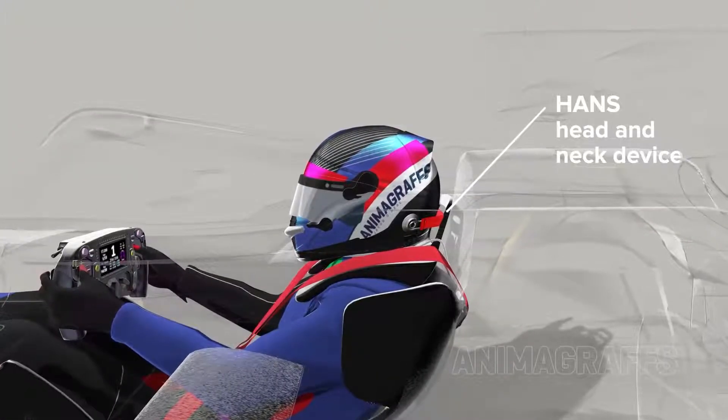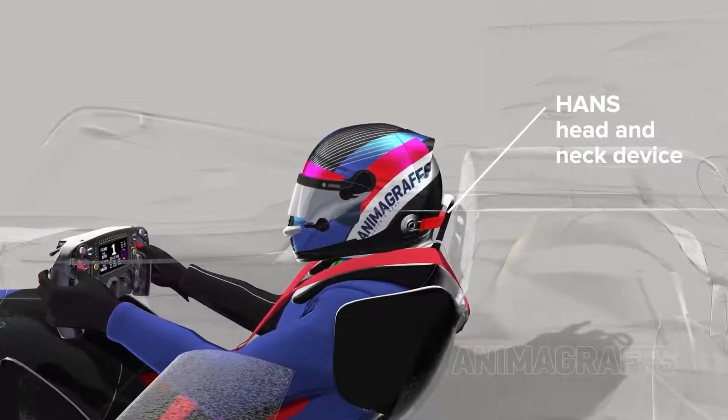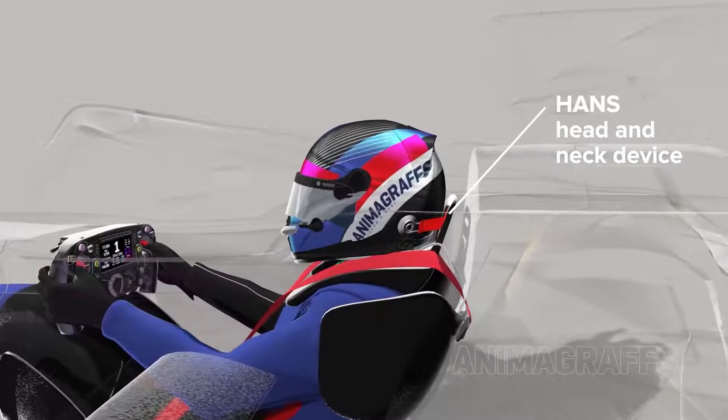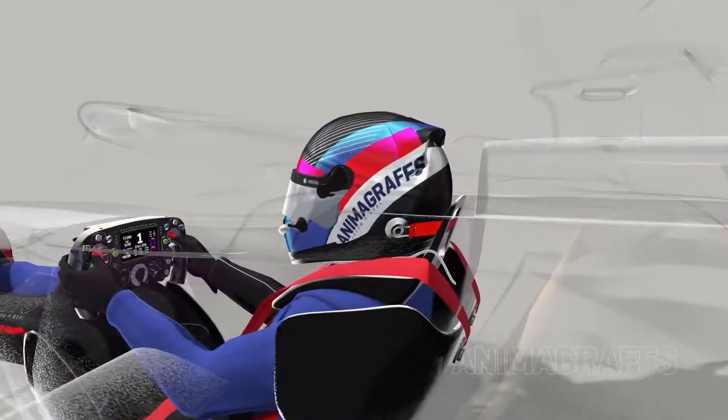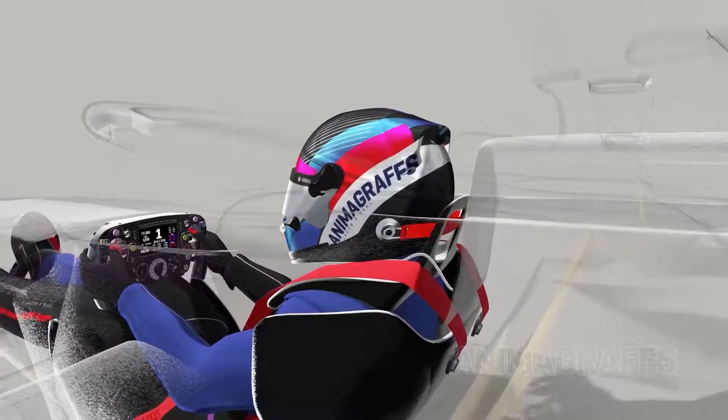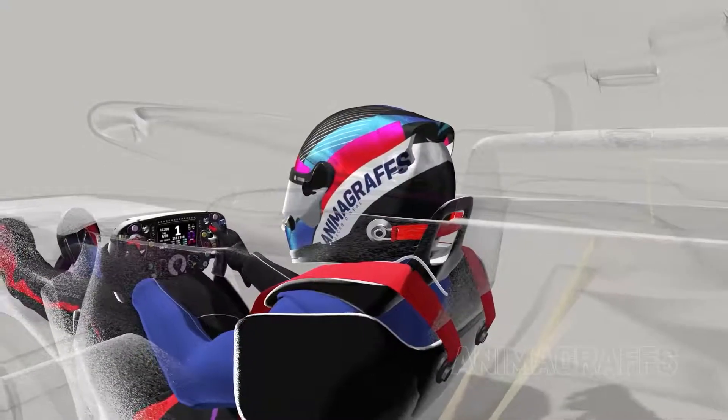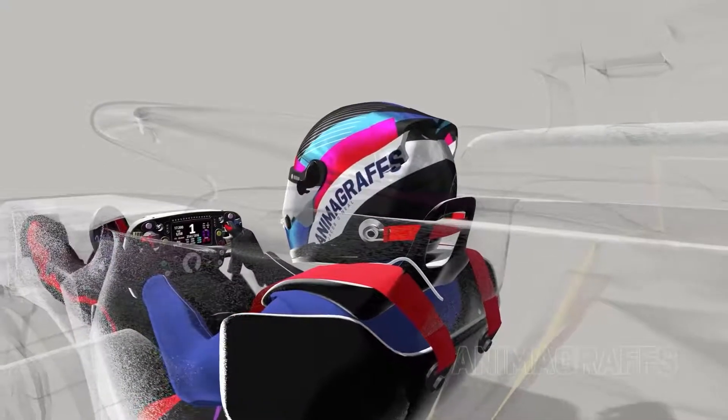Drivers wear a special brace called the Hans, or head and neck device, to limit head movement in adverse conditions. A connected strap clips to either side of the helmet, and the shoulder harness straps keep the device pressed against the driver.